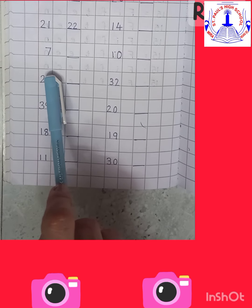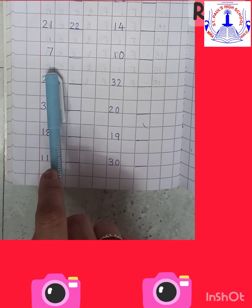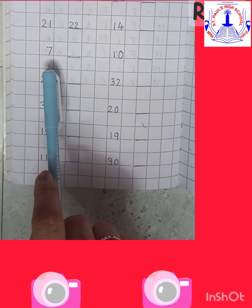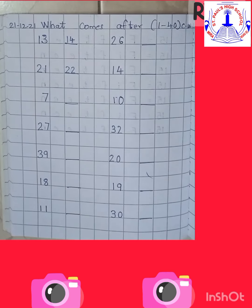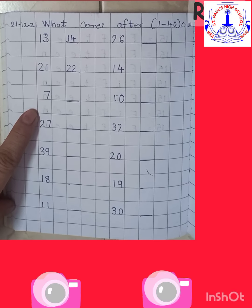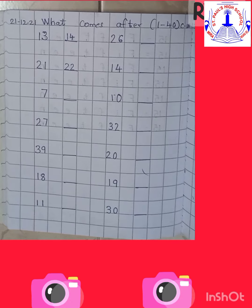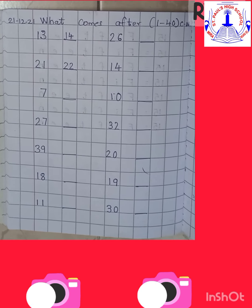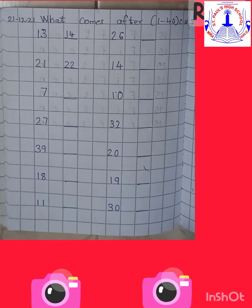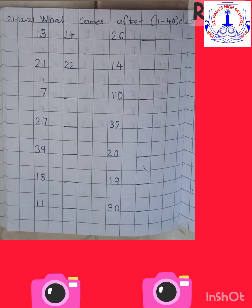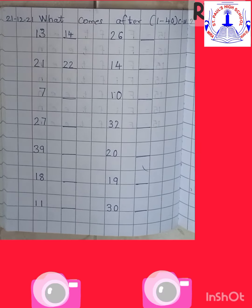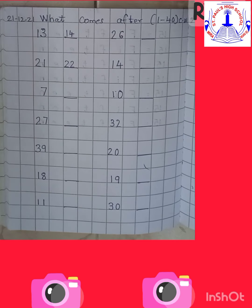Now which is the next number? Number 7. So come on, start from number 1. So now the next number is number 7. Come on, tell me which number comes after number 7. Let's count: 1, 2, 3, 4, 5, 6, 7. So what comes after 7? Number 8.